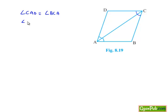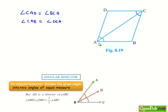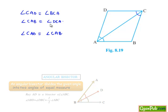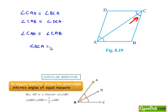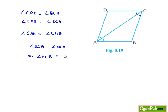Also, angle CAB is equal to angle DCA. Now we know that AC bisects angle DAB, so angle CAD is equal to angle CAB. Since CAD equals CAB, we can equate angle BCA is equal to angle DCA, which implies angle ACB is equal to angle ACD. So angle C is divided by AC equally, and we can say that AC bisects angle C. This completes our first proof.